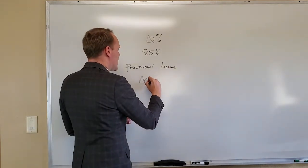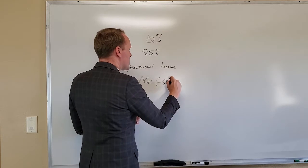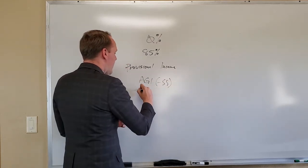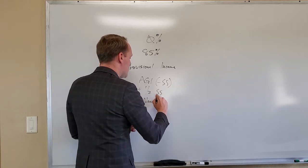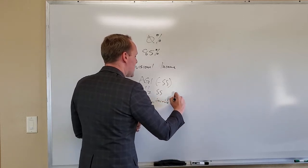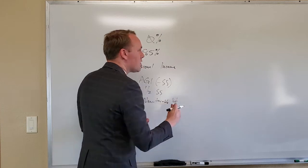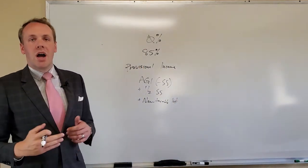So you've got your adjusted gross income, not including Social Security. You have half of your Social Security benefit and you have what's called non-taxable interest. Non-taxable interest is generally generated by municipal bonds.